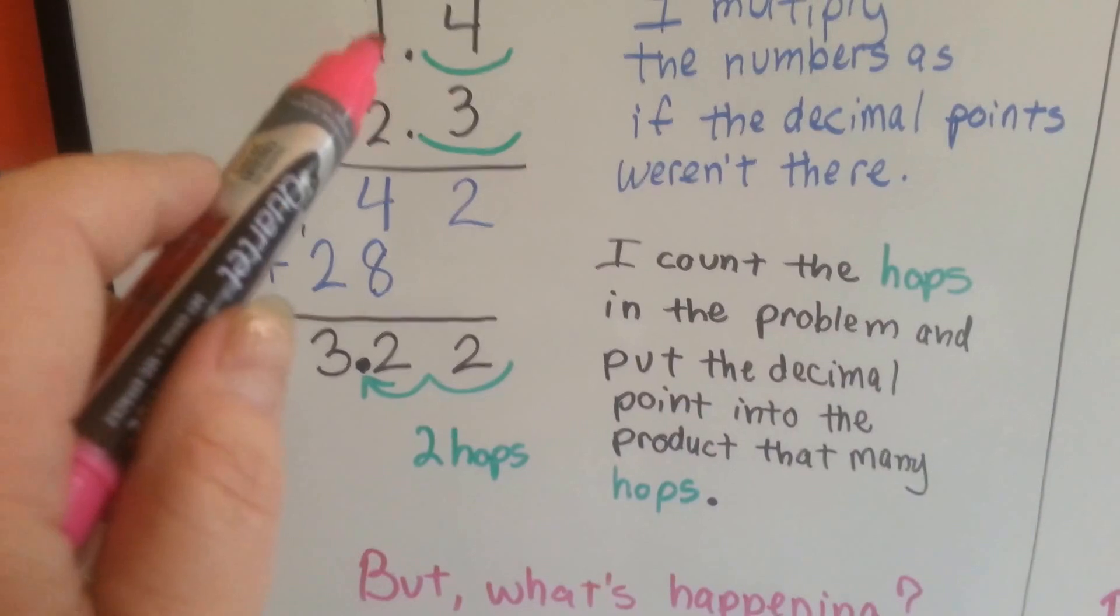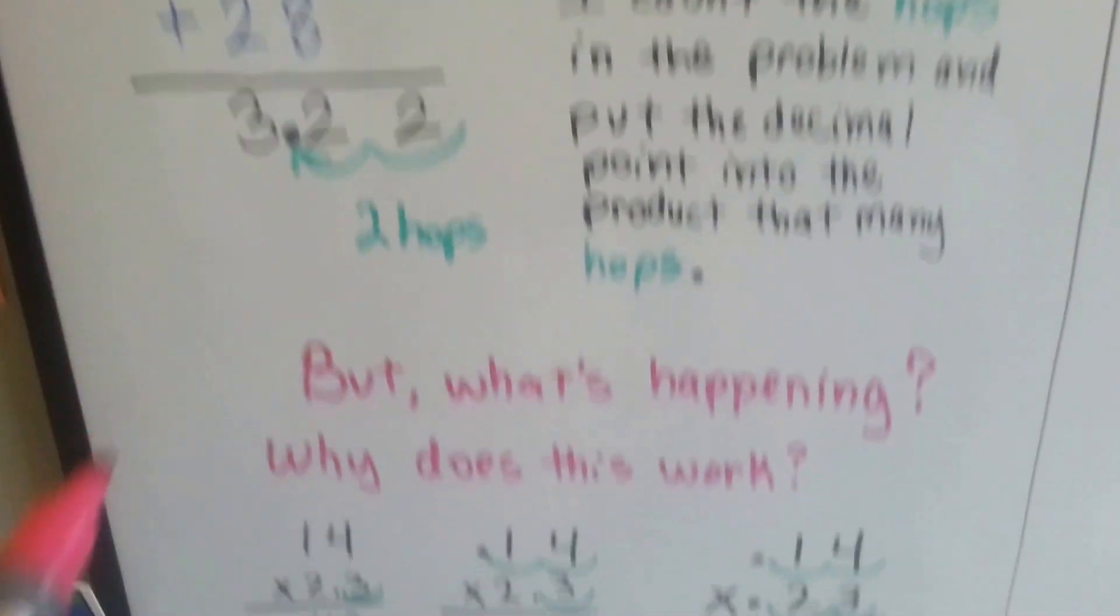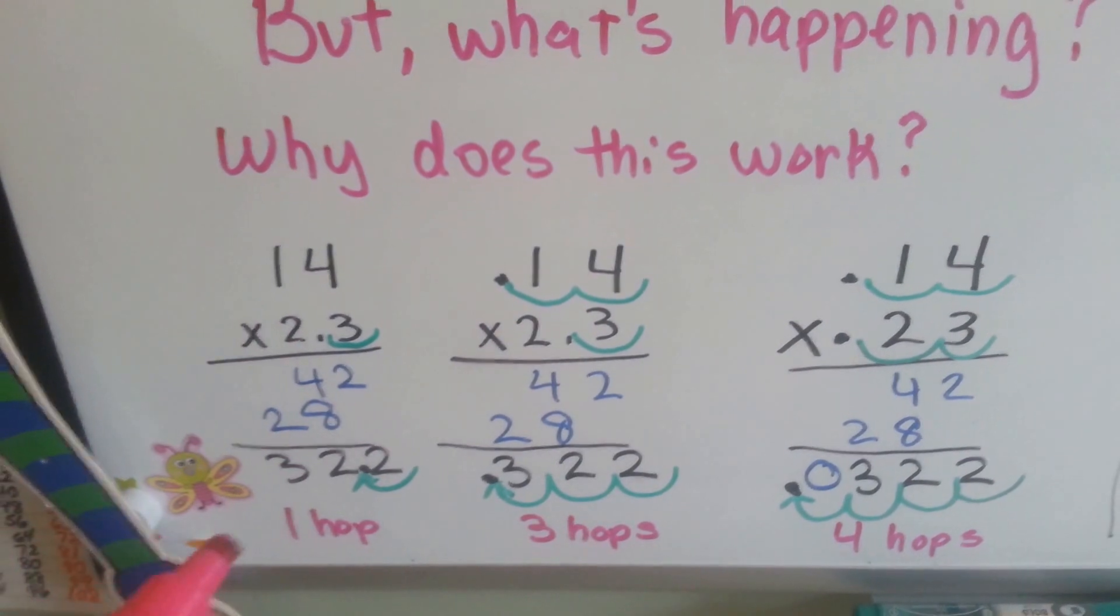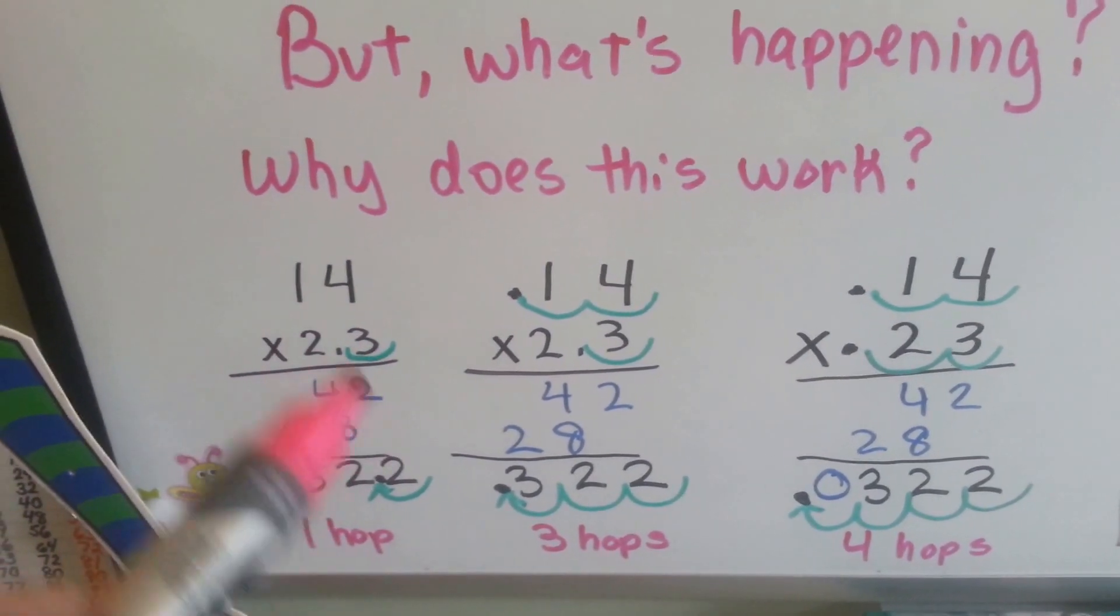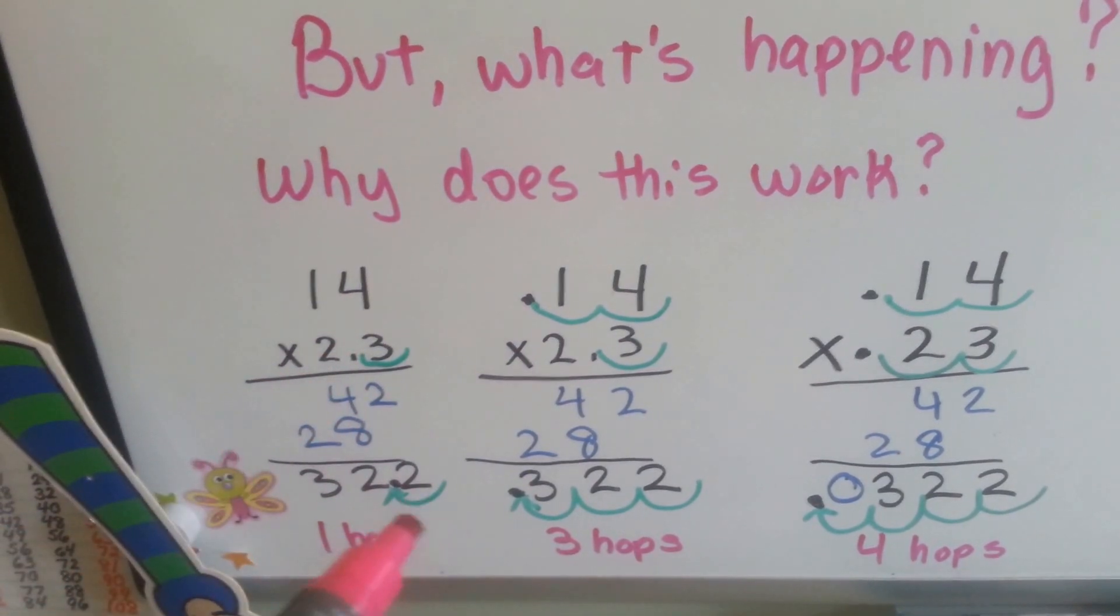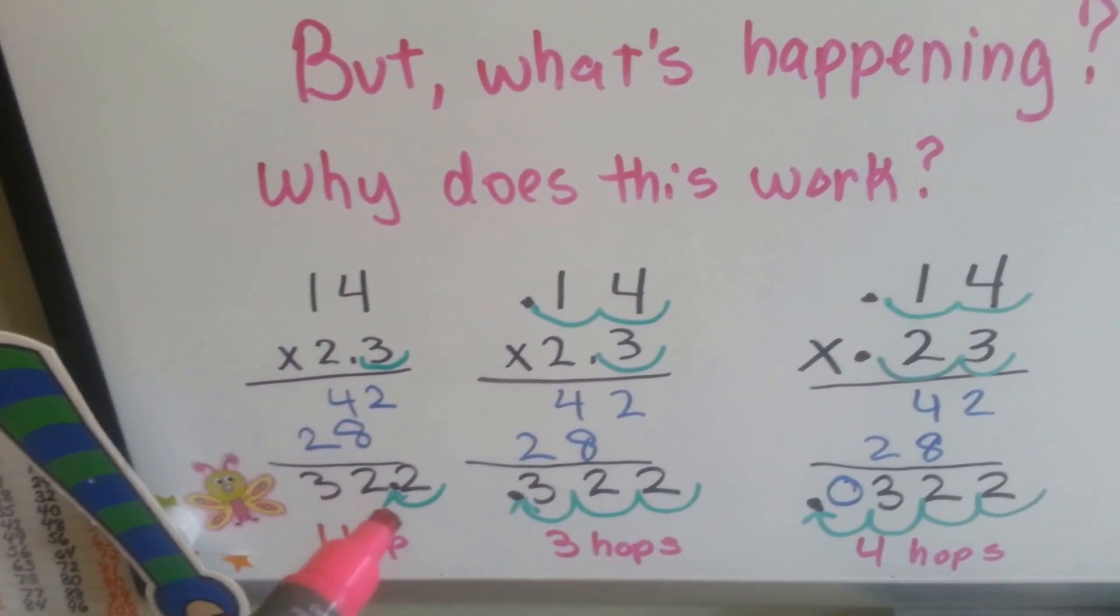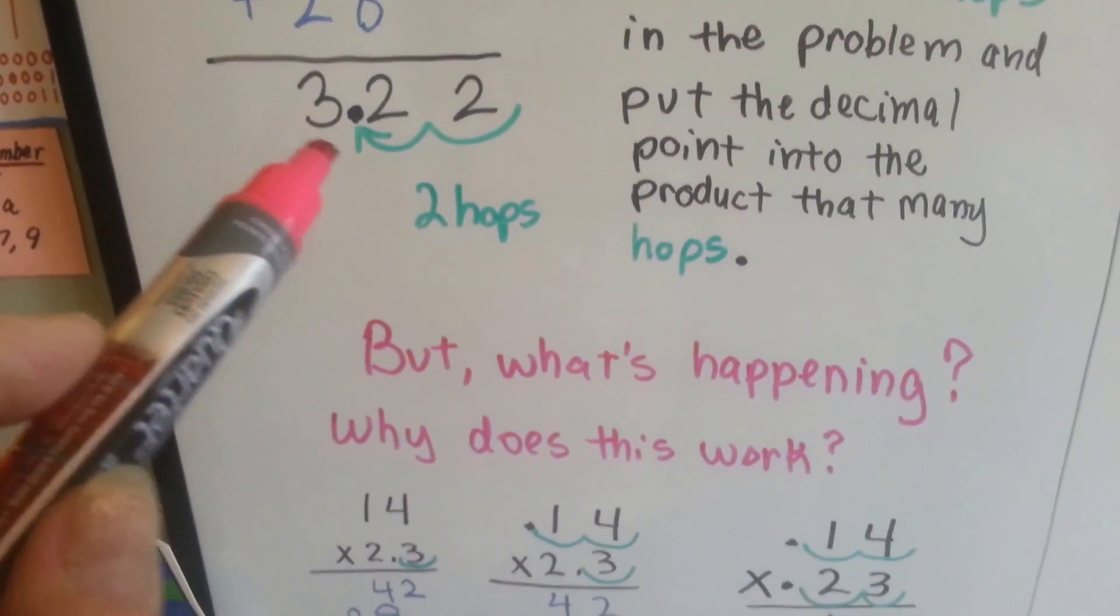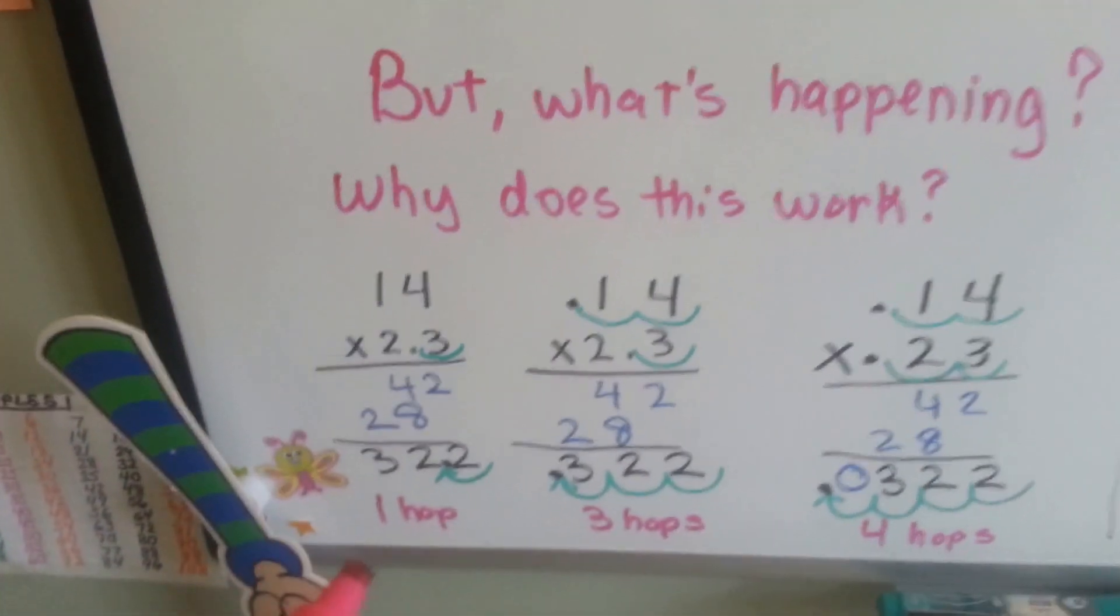Instead of 1.4 and 2.3, let's make it a full 14 and a 2.3. Then, when we do the same multiplication, we only have 1 hop. That means the answer is 32 and 2 tenths. So it changed from the 3 and 22 hundredths. Because we only did 1 hop.